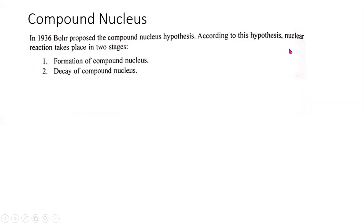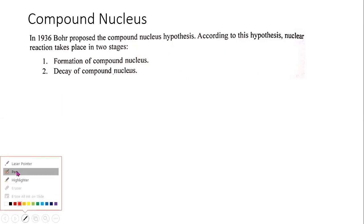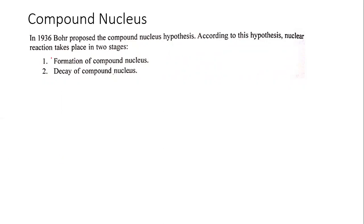According to the hypothesis, nuclear reaction takes place in two stages. The first is the formation of the Compound Nucleus, and the second is the nuclear reaction — the decay of the Compound Nucleus.